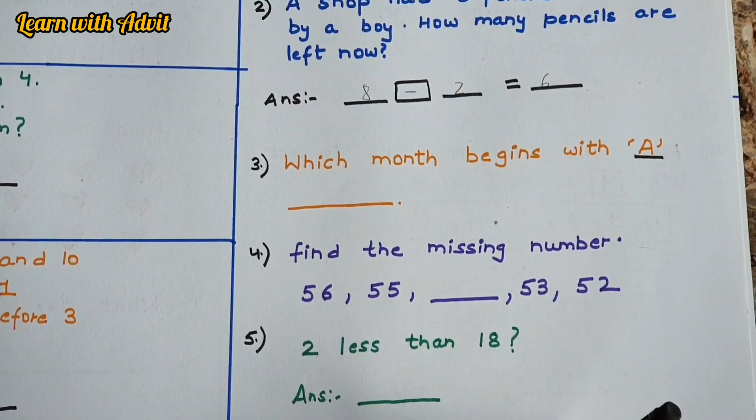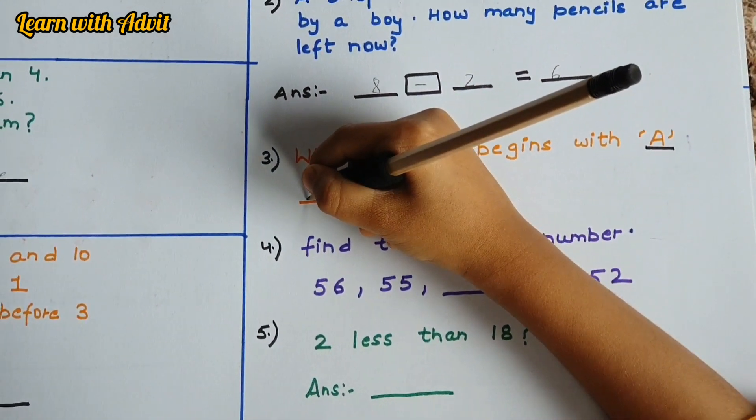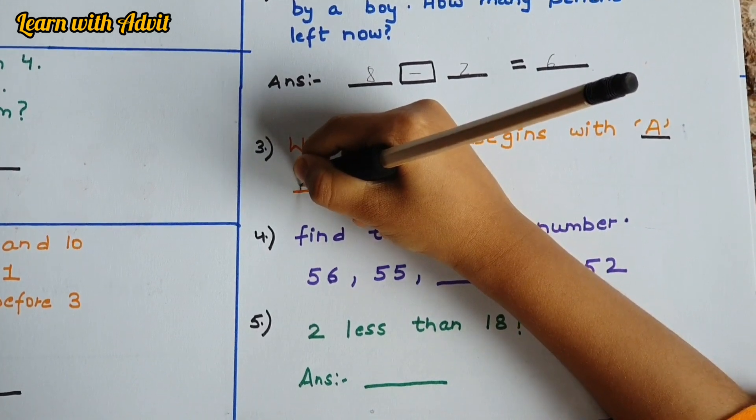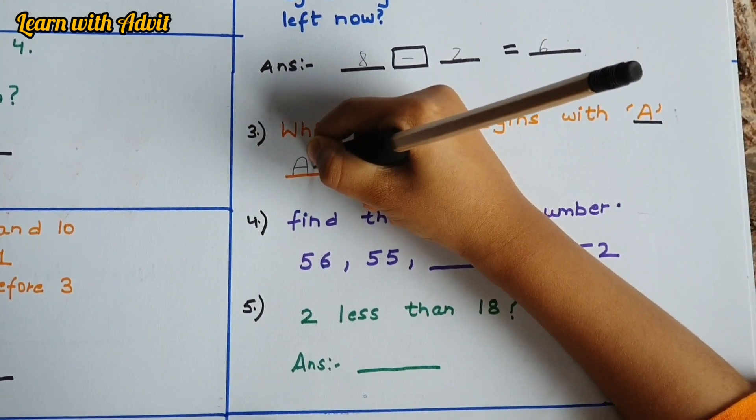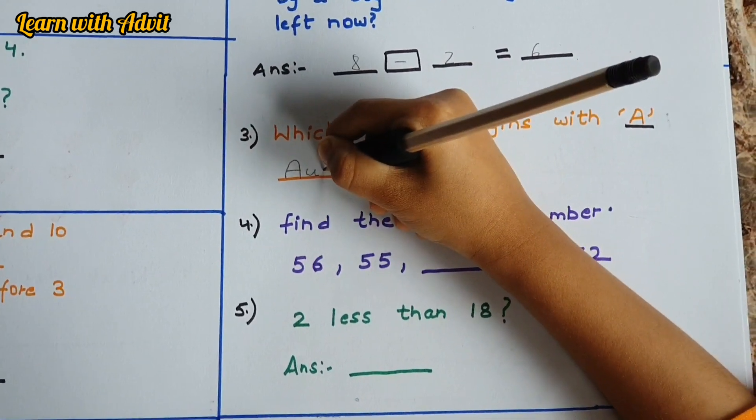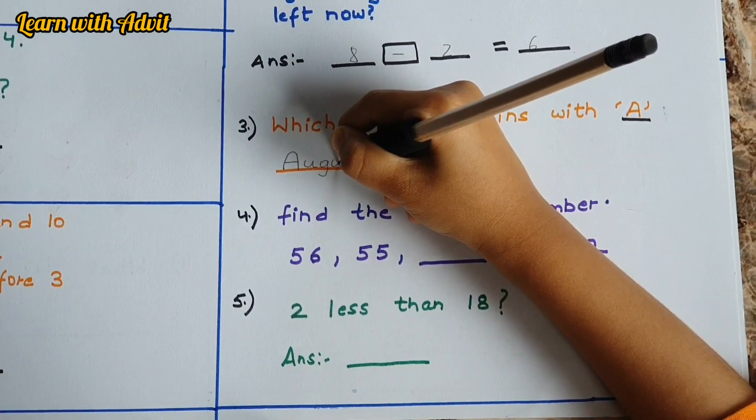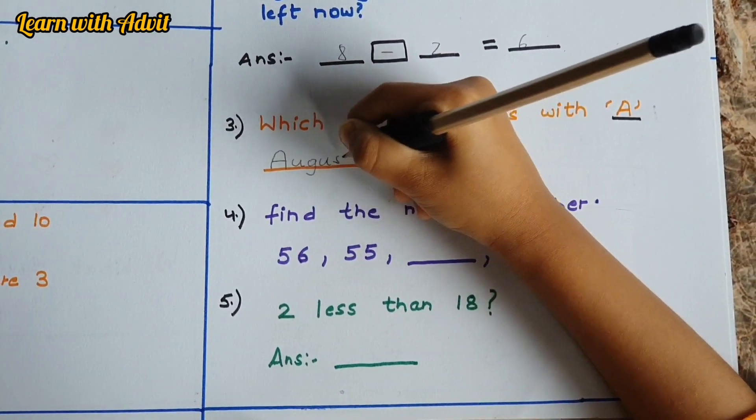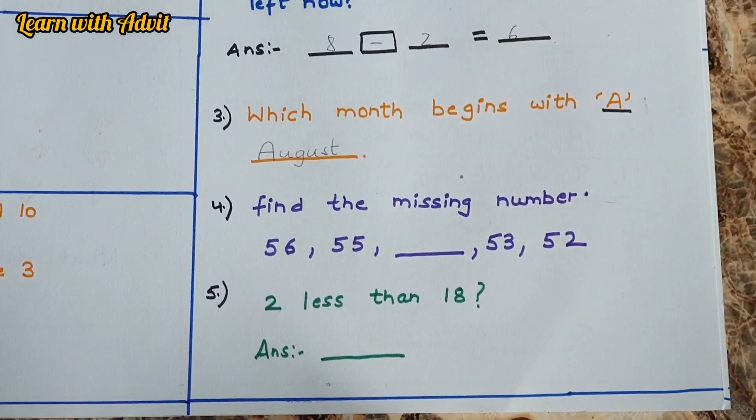Which month begins with letter A? April or August? You can write any one. I am going to write August. A-U-G-U-S-T. Good boy.